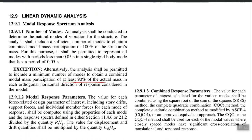In ETABS particularly, these factors are not applied automatically — you have to apply them through the scale factor while defining the load case, or you can apply them manually on the responses after you run the analysis. It simply says apply the R factor: each quantity should be divided by R over I, and then only displacement and drift should be multiplied by CD. For combined response parameters, you have options including SRSS, CQC, and an improved method called CQC4. Please refer to ASCE 4 for details of that.